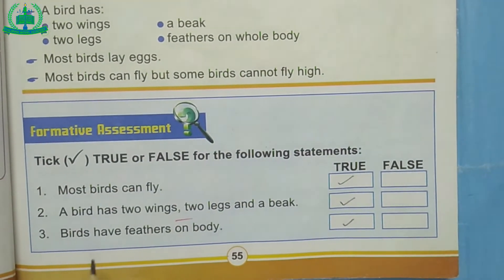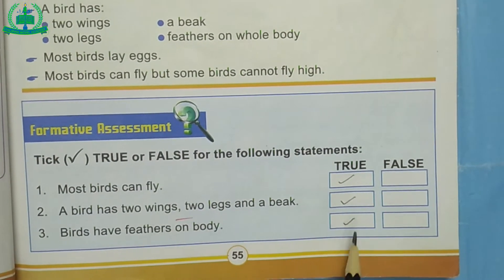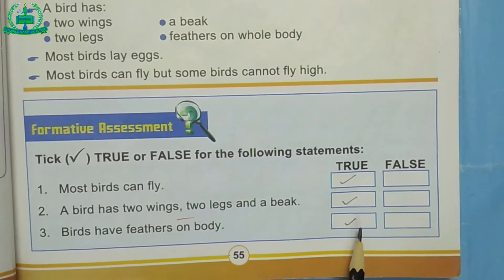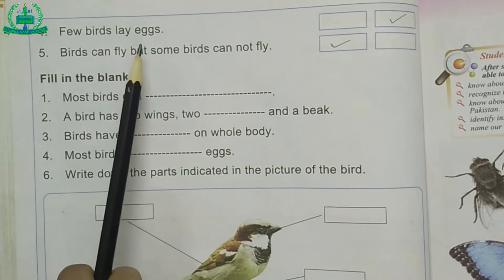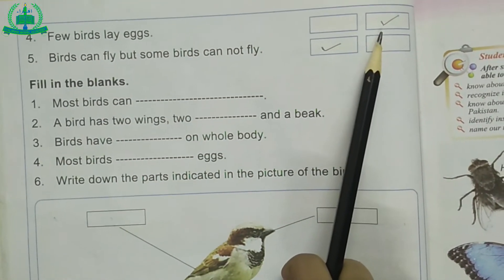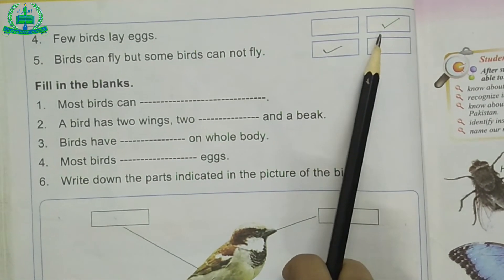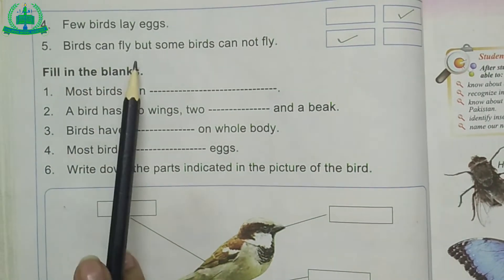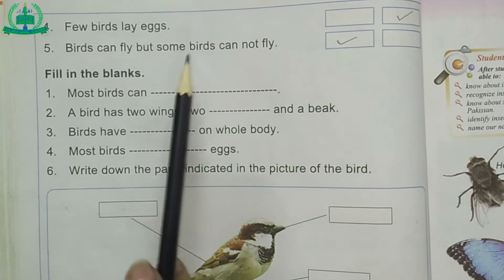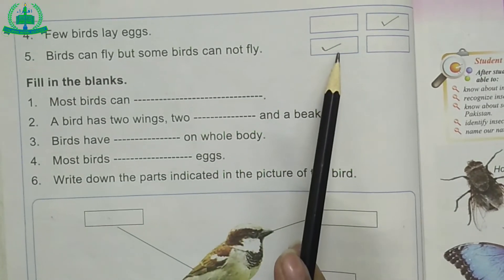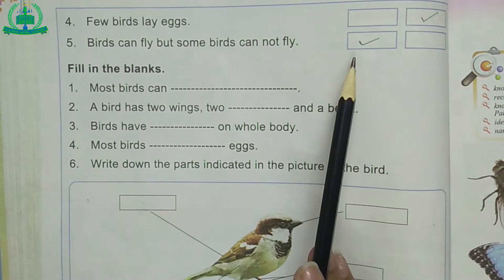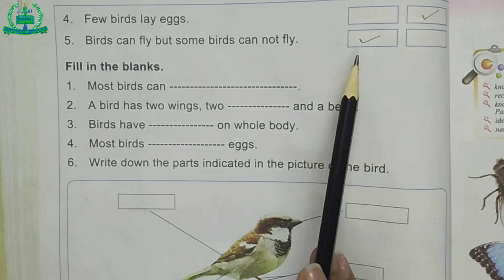Number 3: Birds have feathers on body. This statement is true because birds have feathers on the whole body. Number 4: Few birds lay eggs. This statement is false because most birds lay eggs. Number 5: Birds can fly, but some birds cannot fly. This statement is true because some birds are heavy in weight, so they cannot fly high.